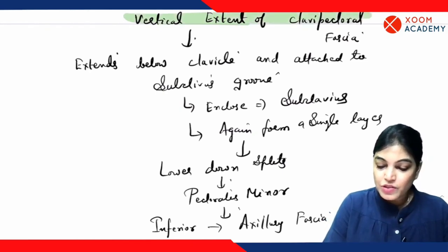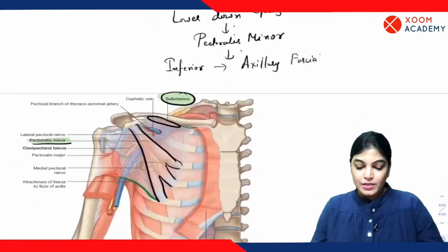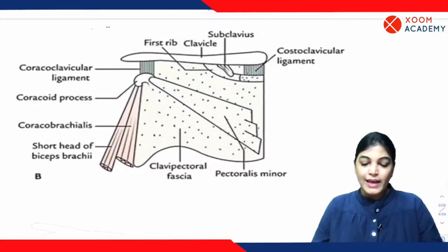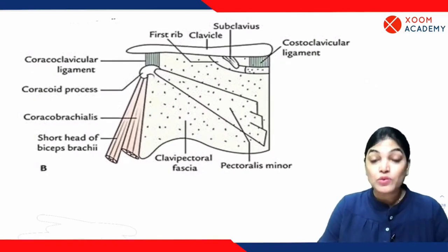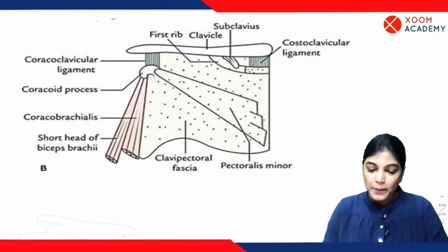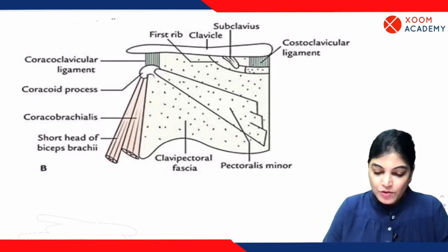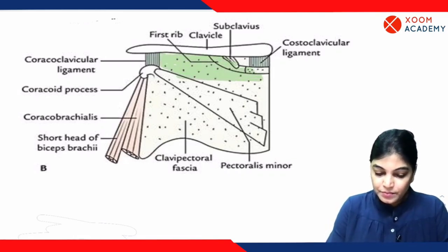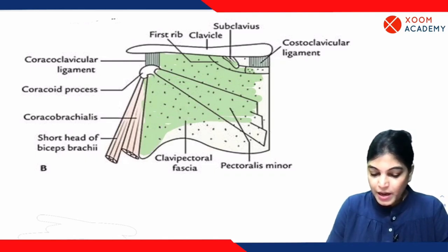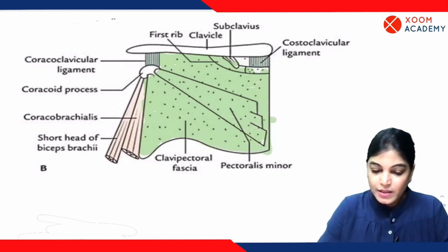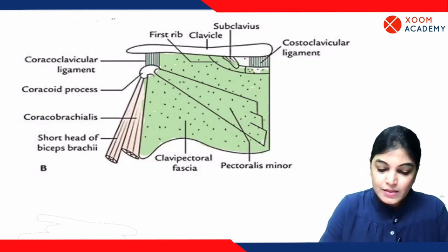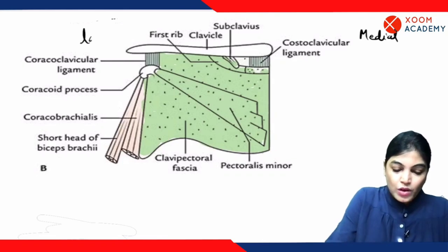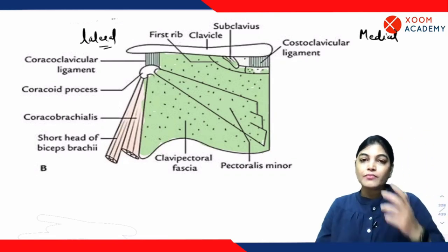Now let's talk about the horizontal extent. I would like to show you this schematic diagram helping you understand the medial and lateral attachment of the clavipectoral fascia. In this diagram the clavipectoral fascia has been clearly shown. This is the medial side and this is the lateral side, and on the medial side the clavipectoral fascia has specific attachments.